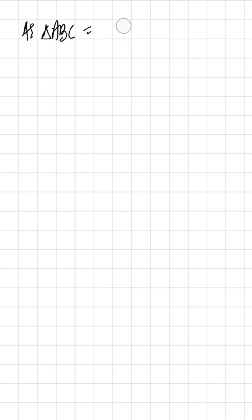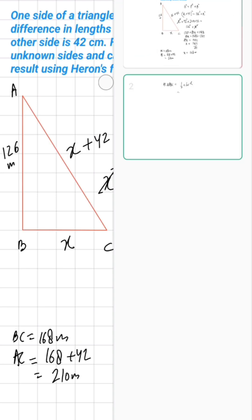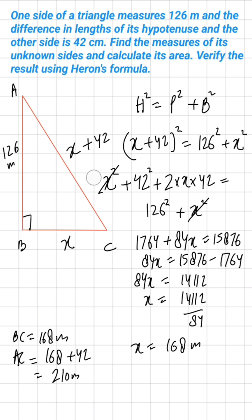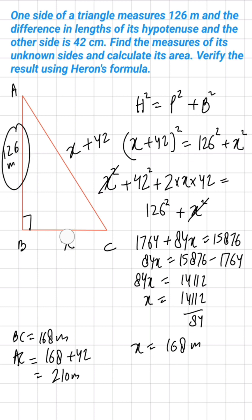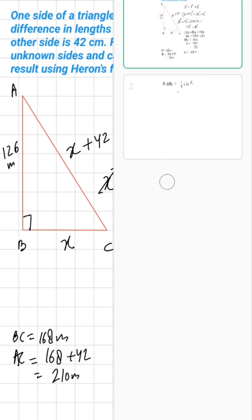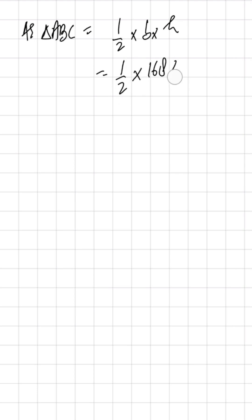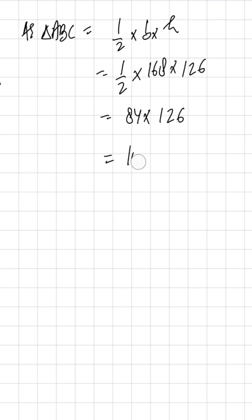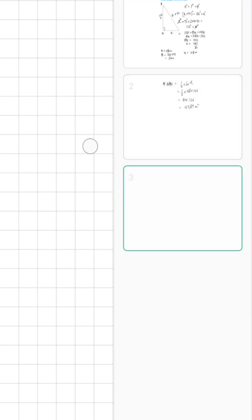For the area of triangle ABC we use the formula: Area = ½ × base × height. Since it is a right angle triangle, the two arms with 90° between them are the base and height. Base is 168 and height is 126, so: ½ × 168 × 126 = 84 × 126 = 10584 meters squared.